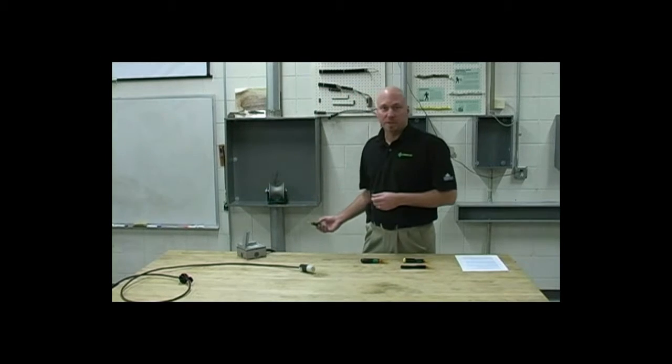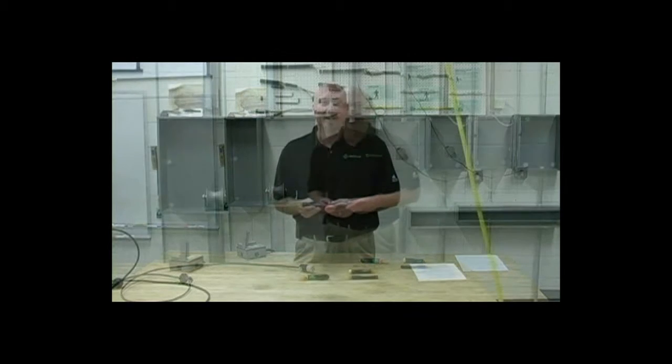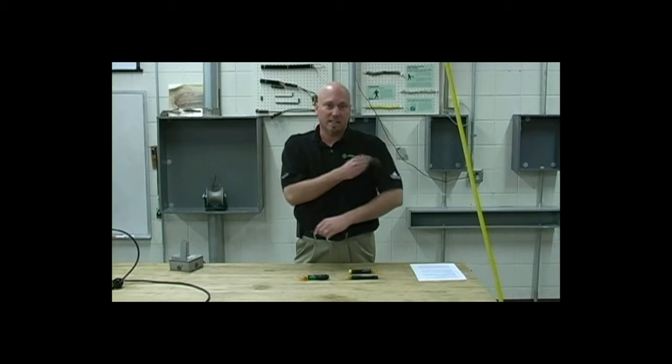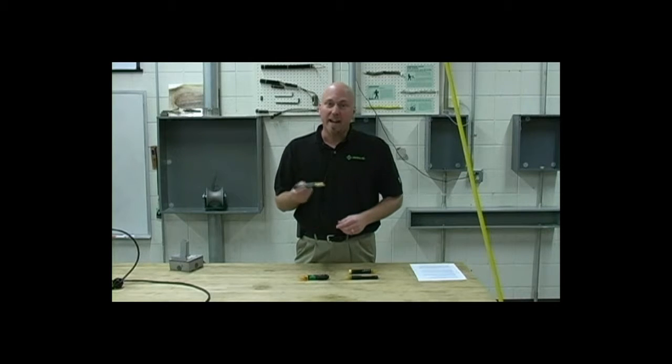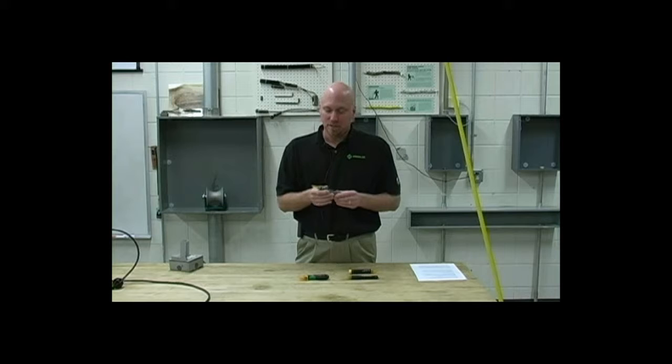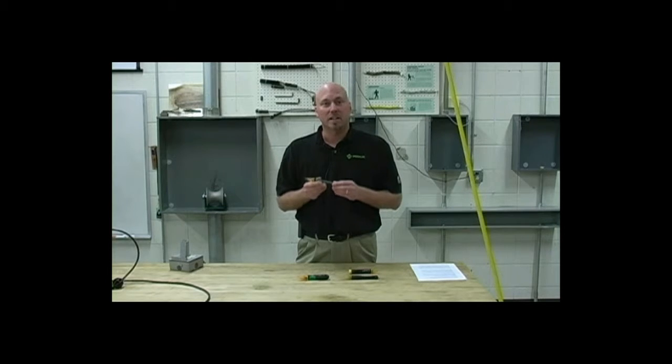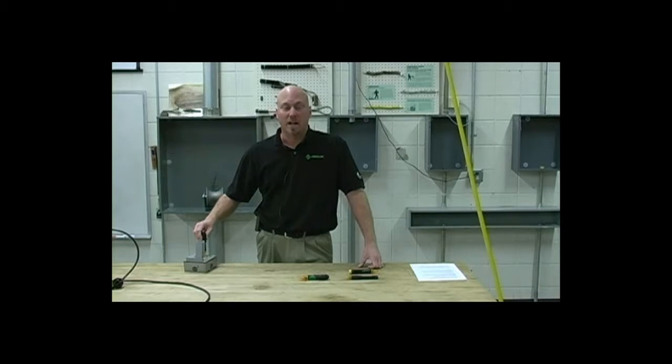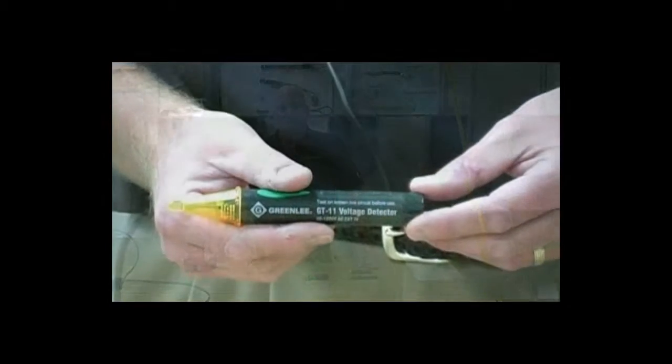The GT11 cannot detect AC voltage in cable through a metallic shield such as armored cable or metallic conduit. Like any non-contact voltage tester, the GT11 can be sensitive to static electricity. A handy way to check the batteries of the unit is to rub it against your shoulder, see that you get the LED lights and the beeping. This, however, is not a substitute for testing on a known live circuit.